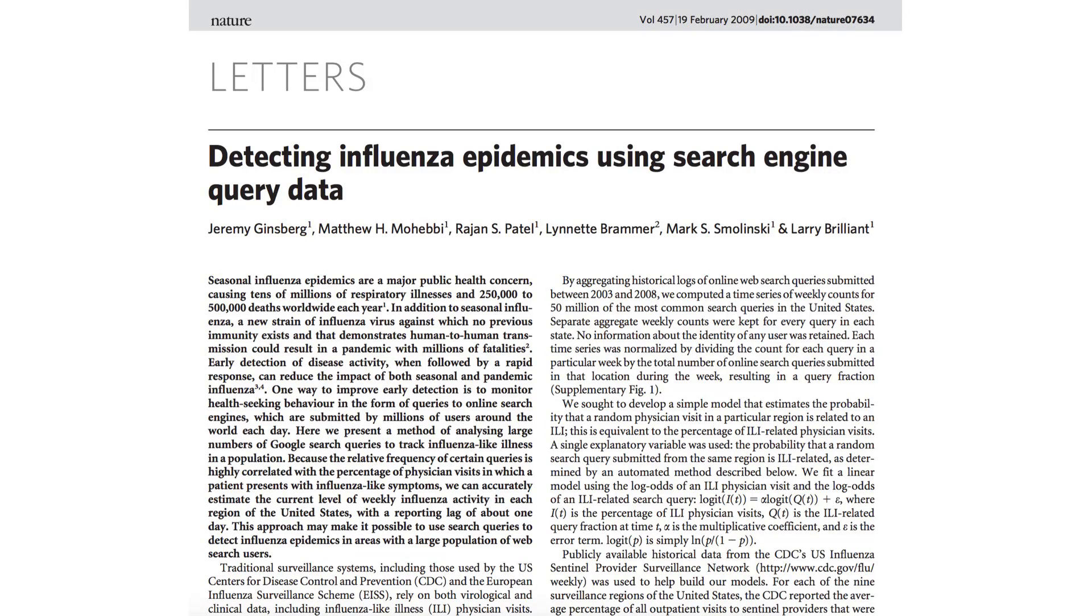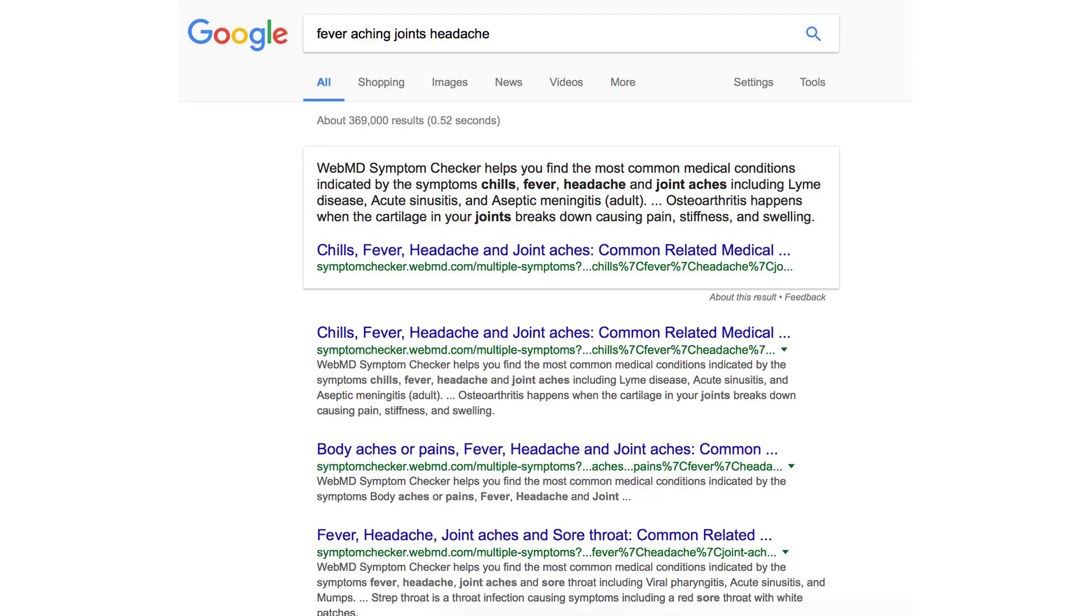One of the poster children of big data success was a paper that was written in Nature by a set of researchers from Google Research and various academic institutions. What they were looking at was whether they could take these search queries, so queries that, let's say I would have put in this morning fever, aching, joints, headache.